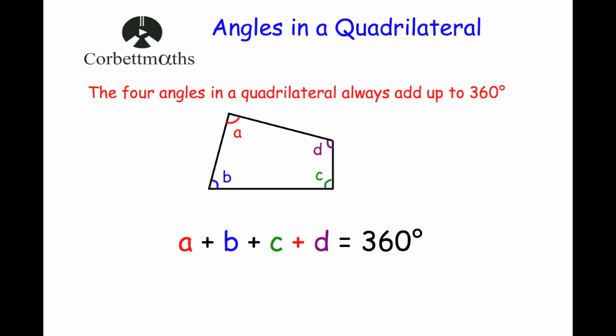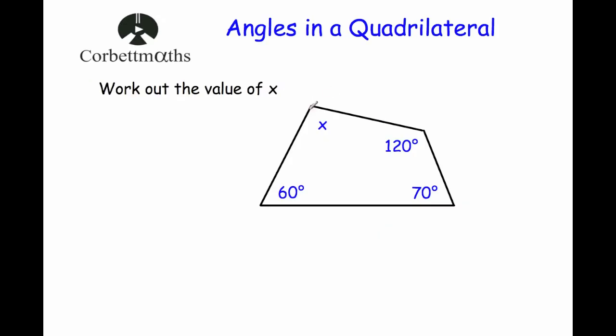Let's have a look at a typical question. Here we've got a quadrilateral. It's got four angles and we know three of them: 60, 120, and 70. We've been asked to find the size of angle X.